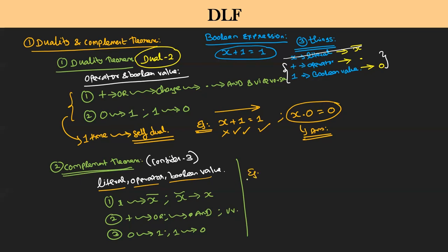Example for complement theorem: a plus 0 equal to — how will you change it? a becomes a-bar, plus becomes dot, 0 becomes 1. So the complement is a-bar dot 1. This is the answer. Scan from left to right.